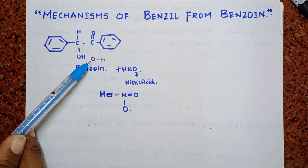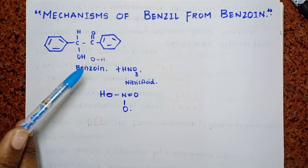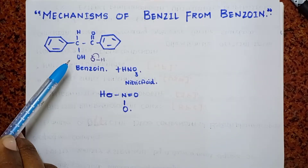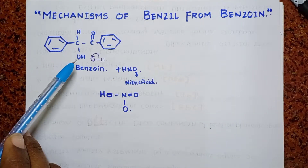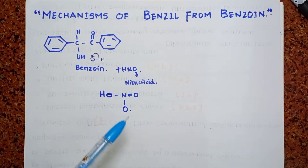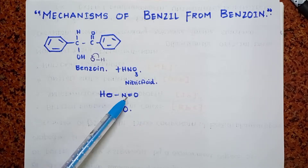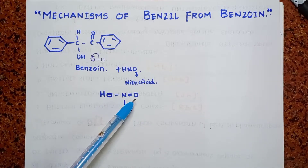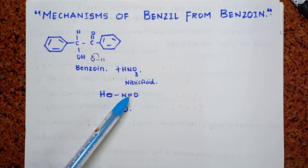Oxygen and hydrogen are more electronegative, so it will attract the benzoin. Now what I am going to do is form O-. Next, I am going to observe the nitric acid. Nitric acid will react, and this will attract the oxygen from nitrogen — this will attract nitric acid from oxygen.